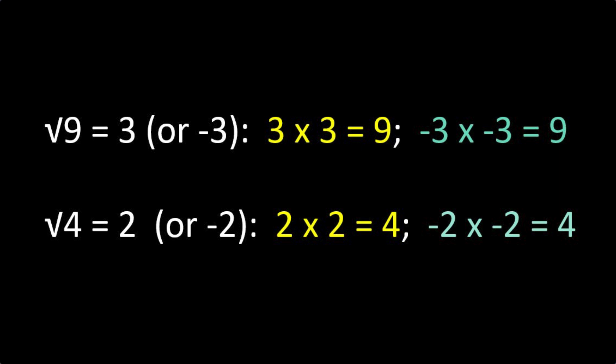So the square root of nine is three, because three times three is nine. And the square root of four is two, because two times two is four.